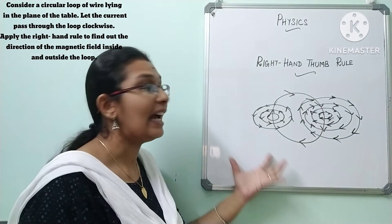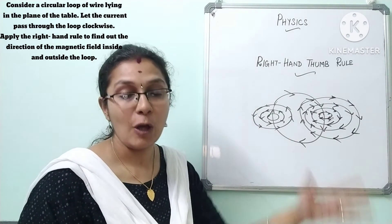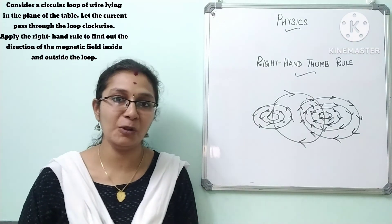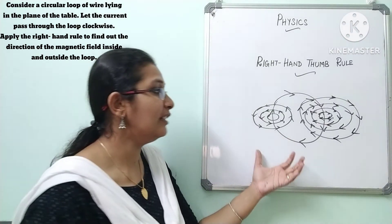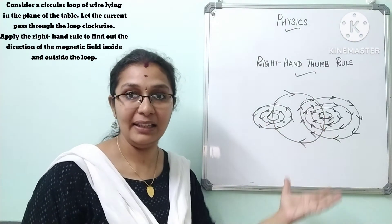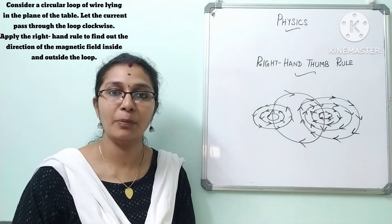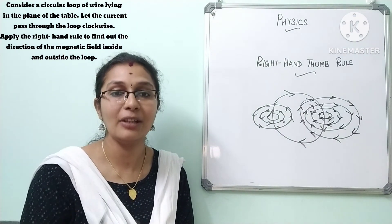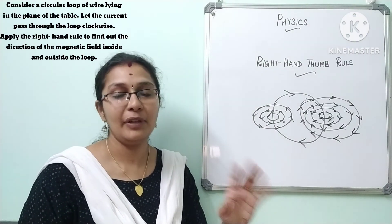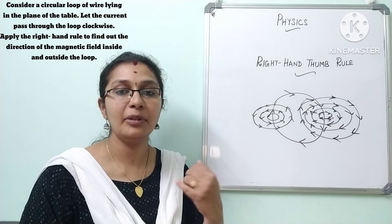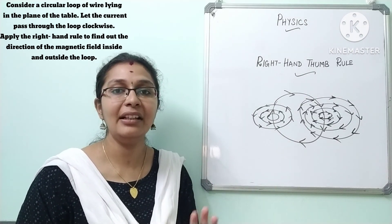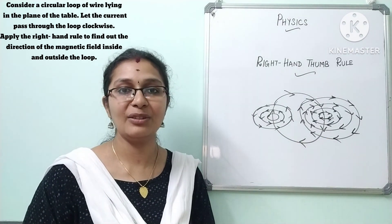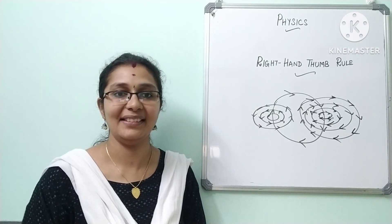So the answer is: inside the loop, the magnetic lines of force are acting into the table, and outside the loop they are coming out of the table, when the direction of current is clockwise. Once you are clear with this concept, try to find it out by yourself and try to solve similar problems. If you are clear with the concept and able to attempt the question, I am sure you can easily score marks on this.